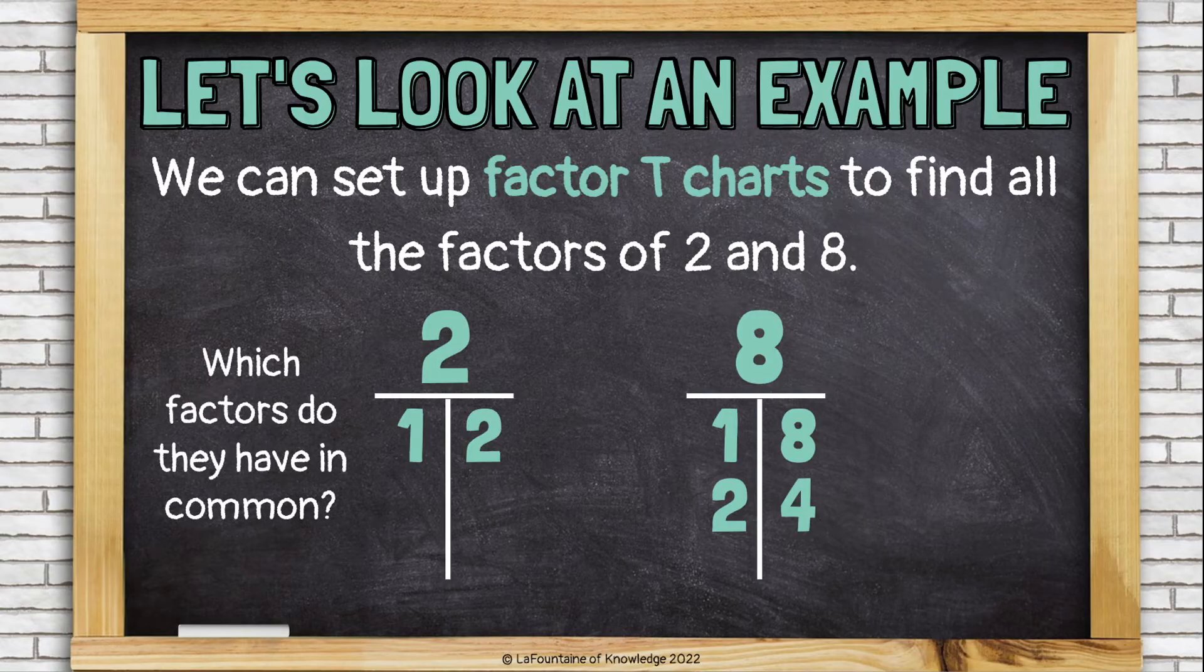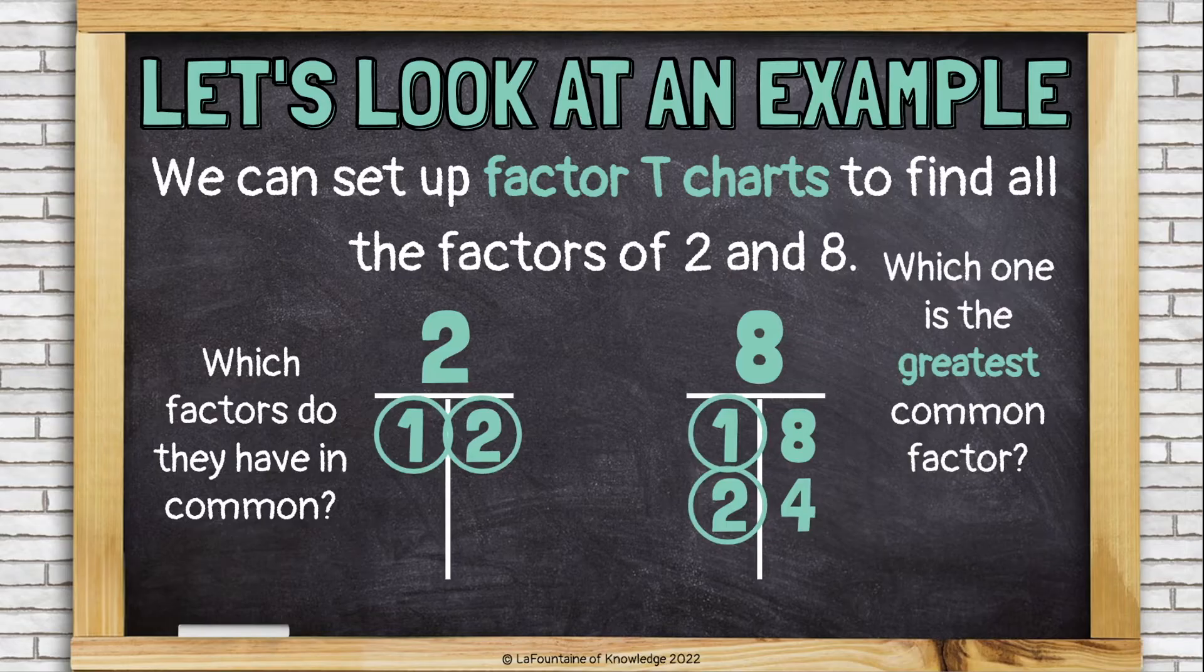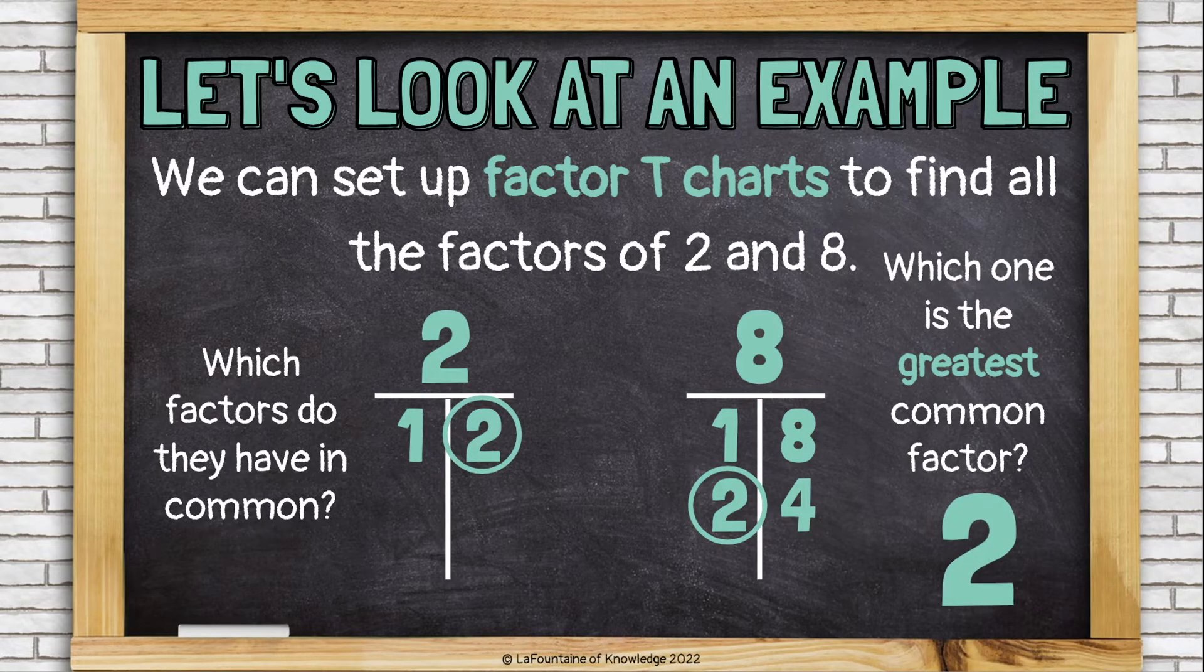Which factors do they have in common? Well, they both have one and they both have two. So, which one is the greatest common factor, meaning the biggest factor? That would be two. Two is larger than one.